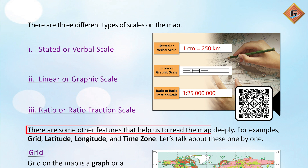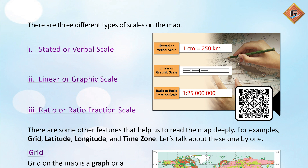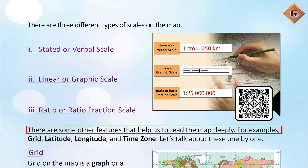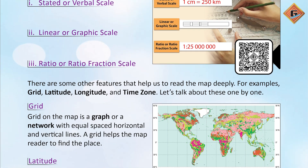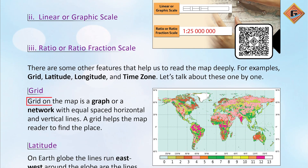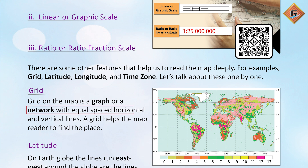There are some other features that help us to read the map deeply — for example, grid, latitude, longitude, and time zone. Let's talk about these one by one. A grid on the map is a network of equally spaced horizontal and vertical lines.